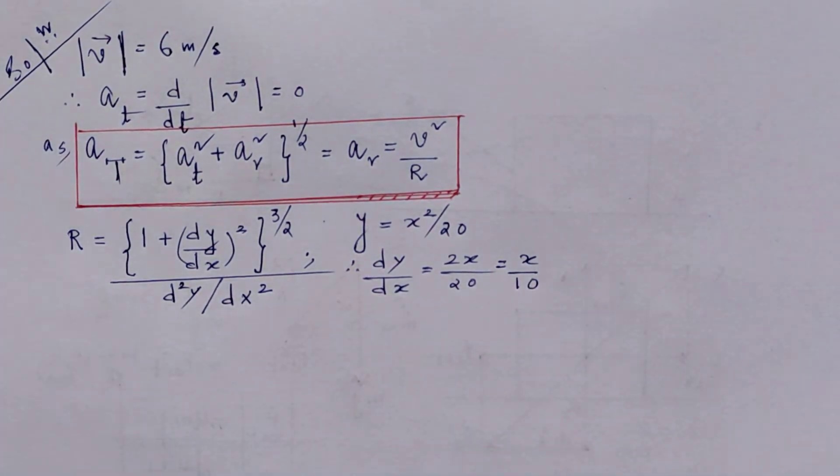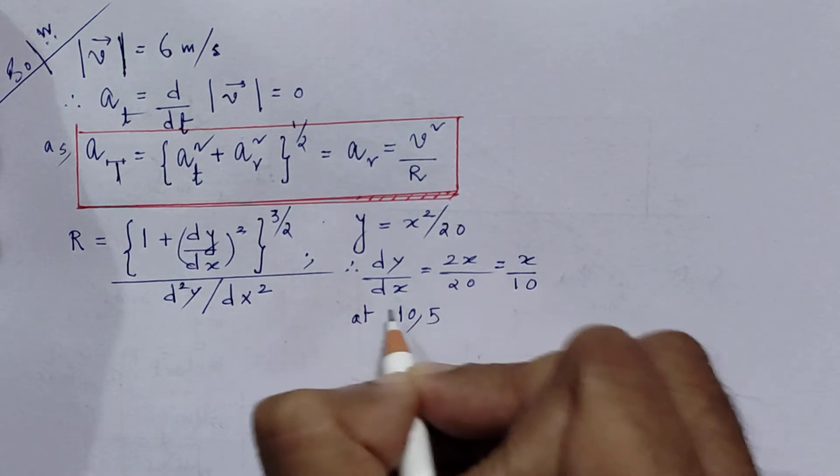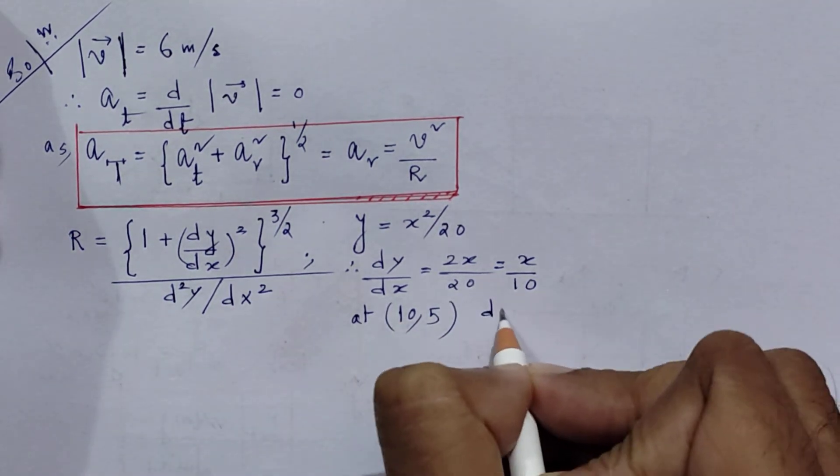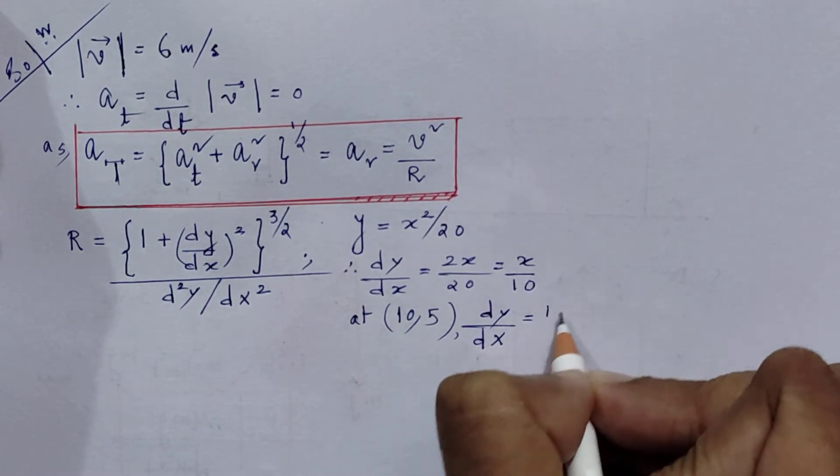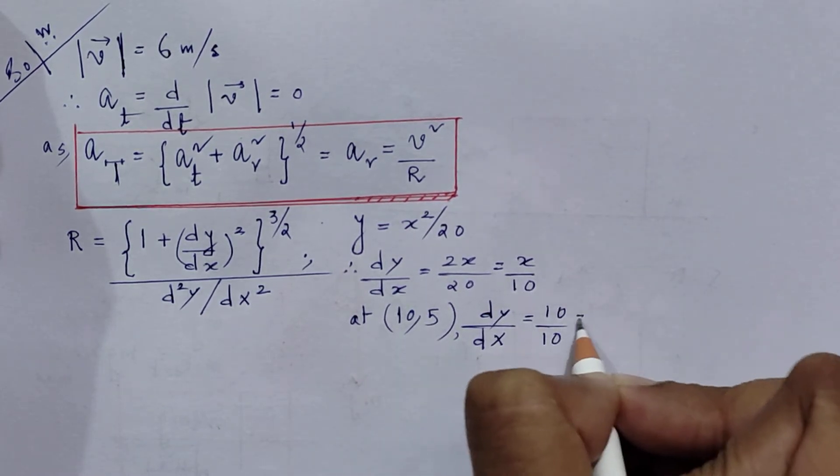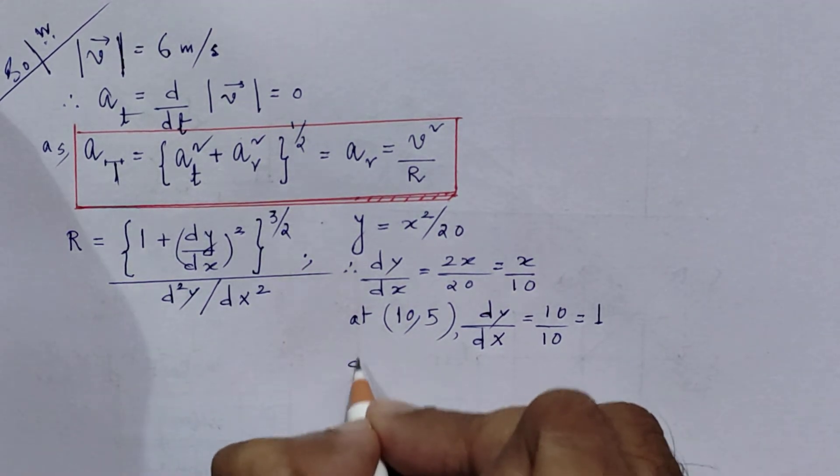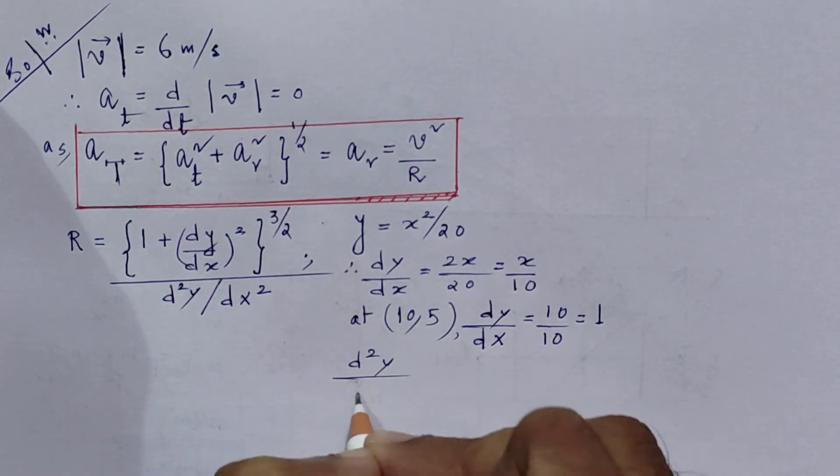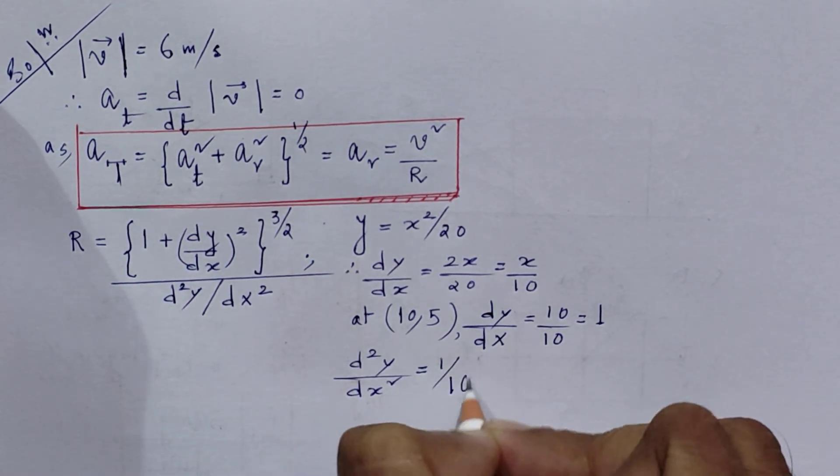Now the points are mentioned (10, 5). So at the point (10, 5), dy/dx is 10 by 10 and that is nothing but 1. Similarly, d²y/dx² is 1 by 10.